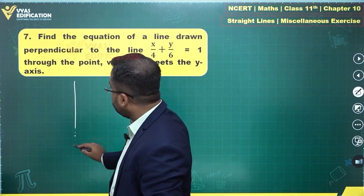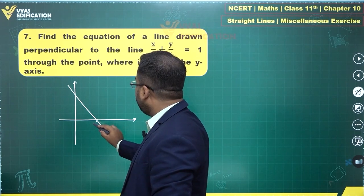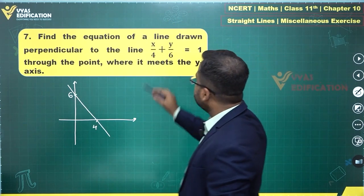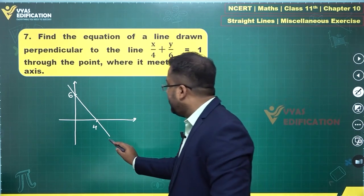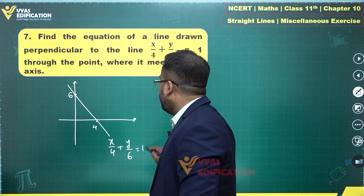So let's draw the actual diagram this time. This is the actual diagram. This point is 4, this point is 6. The x intercept is 4, y intercept is 6. This is the line x/4 + y/6 = 1.